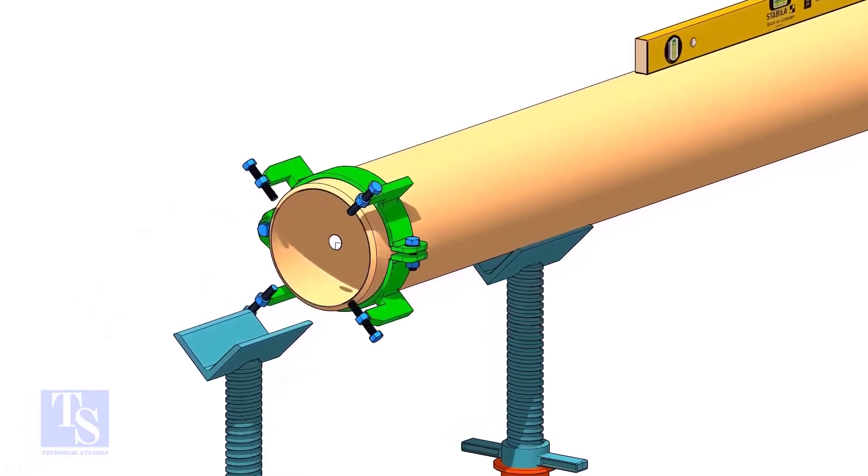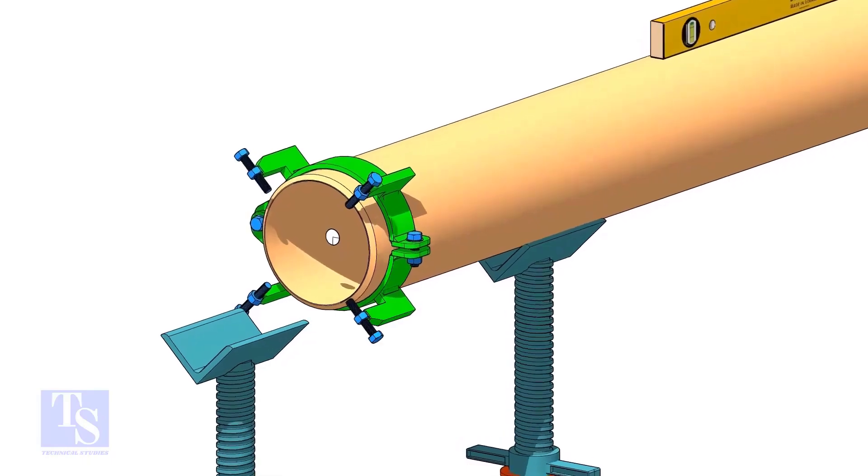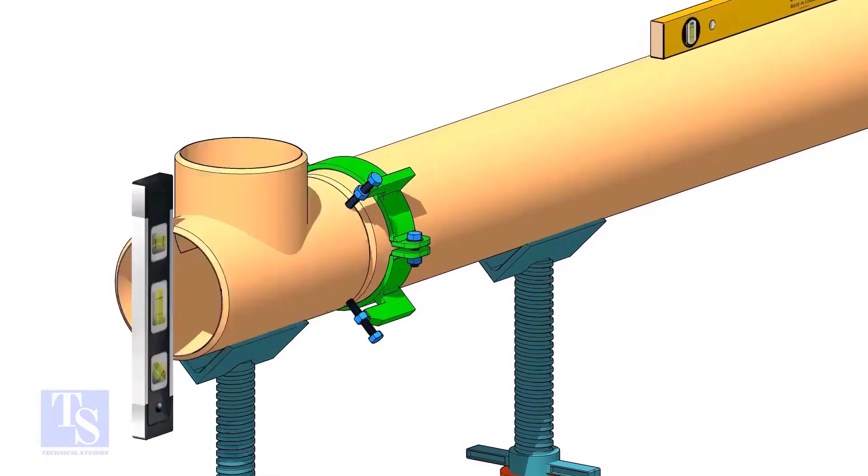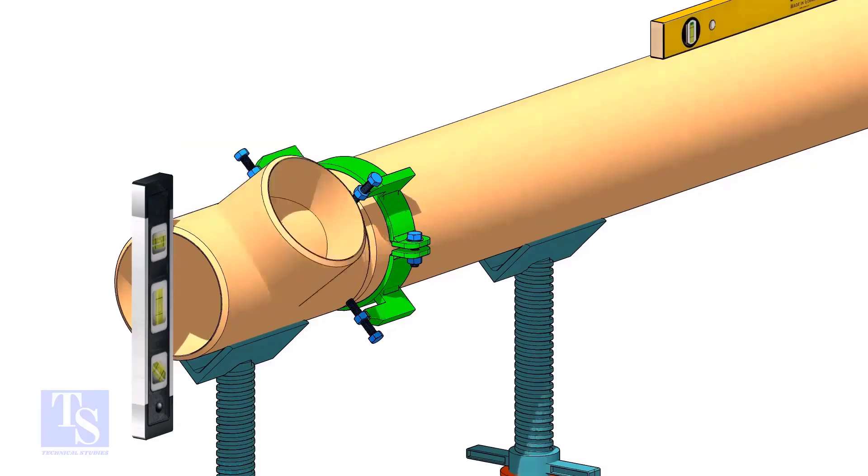Put the clamp, the gap rod, and the T, as shown. Make sure the overlap and the gap are equal around the joint. Rotate the T in the required direction.